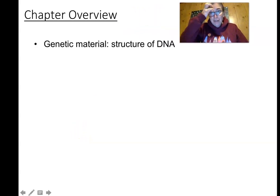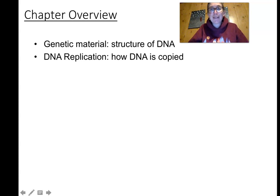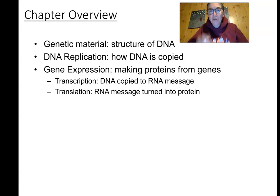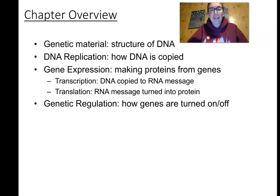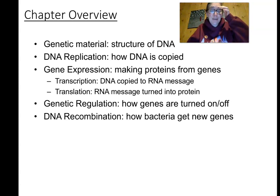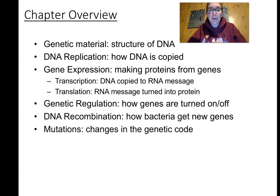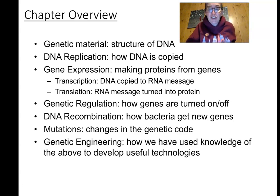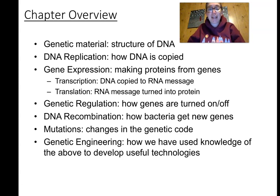Here's a quick overview of the chapter. First, we'll talk about the structure of DNA, then how it's copied — DNA replication. Then we get into gene expression: going from DNA to RNA to proteins. We'll cover genetic regulation — how genes are turned on and off — DNA recombination both naturally and in biotechnology, mutations and their types, and finally genetic engineering tools developed from our understanding of DNA replication and expression.